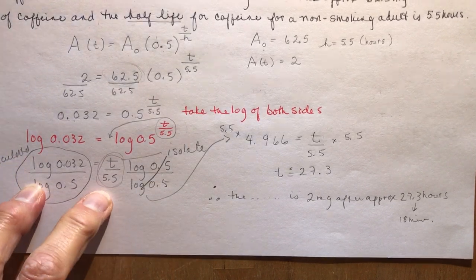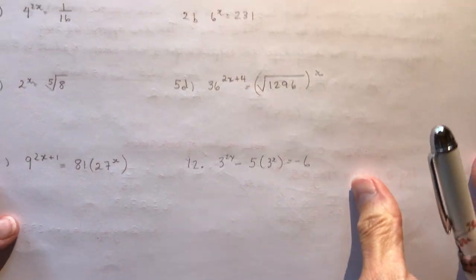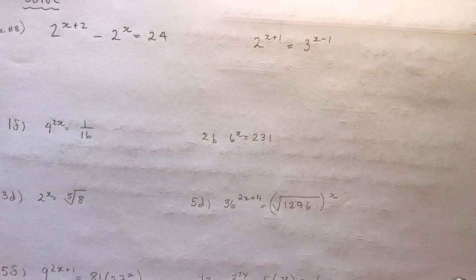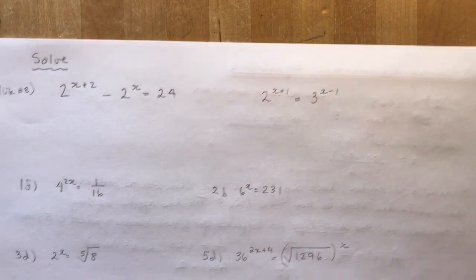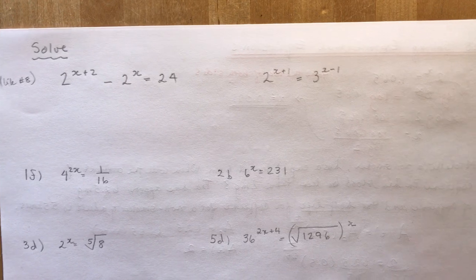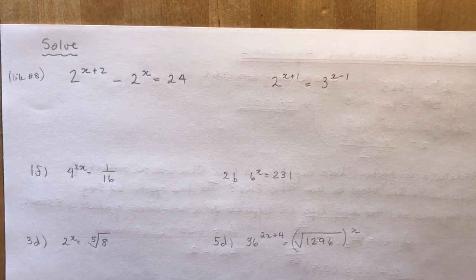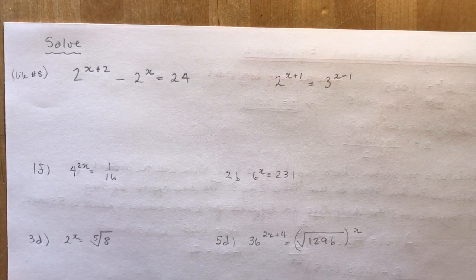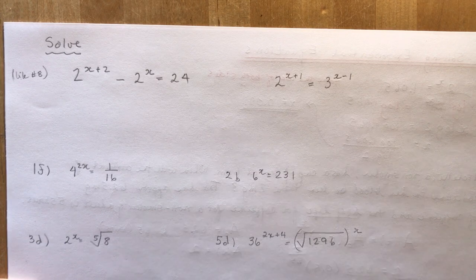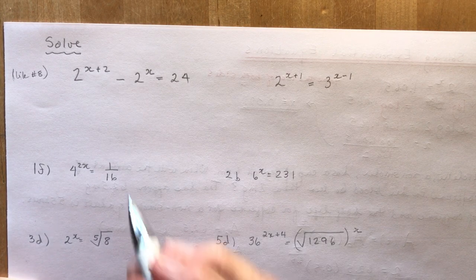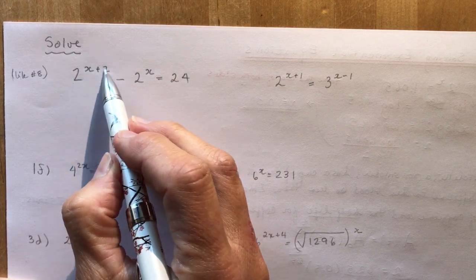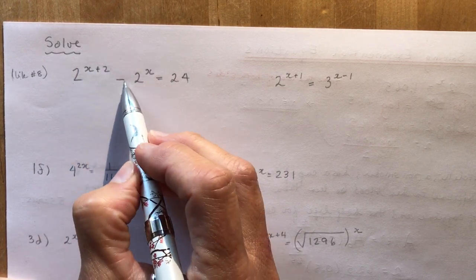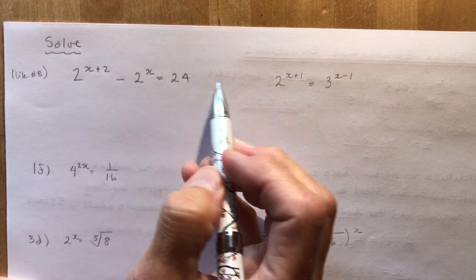Let's solve some more exponential equations — these are from your textbook, specifically the ones my students have had trouble with in the past. The first one: 2 to the (x+2) minus 2 to the x equals 24.